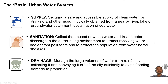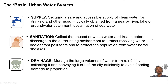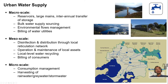Water supply is about securing safe, accessible clean water — typically from a nearby river, lake, or groundwater catchment. Desalination of seawater is also an option, though it brings its own challenges. Sanitation collects used wastewater and treats it before discharging to the environment, for both environmental and public health reasons. Drainage manages large volumes of rainfall by collecting and conveying it out of cities to avoid flooding.